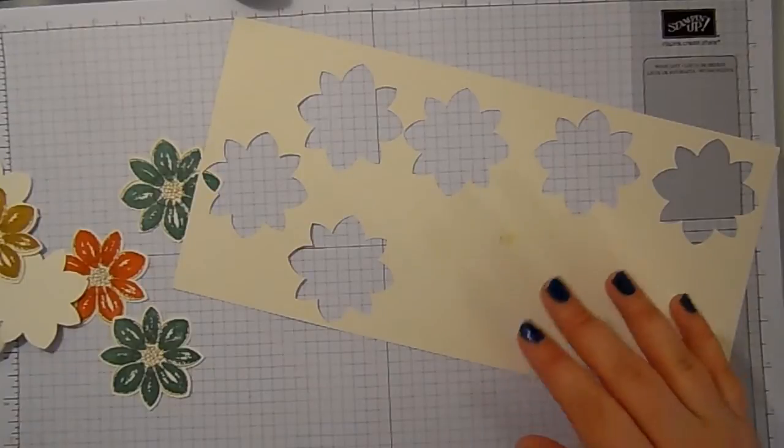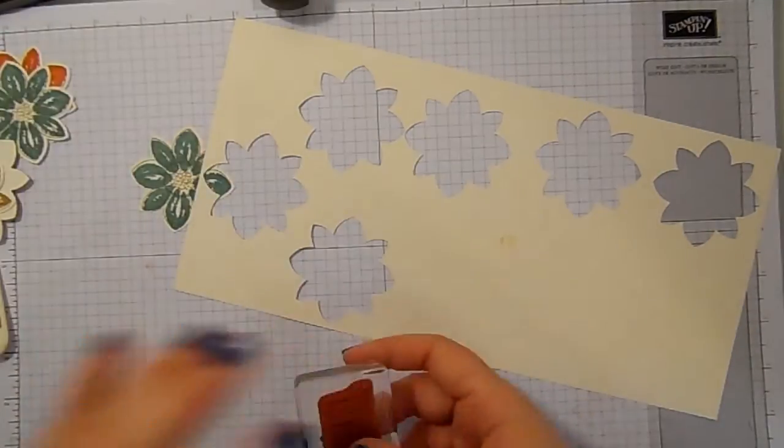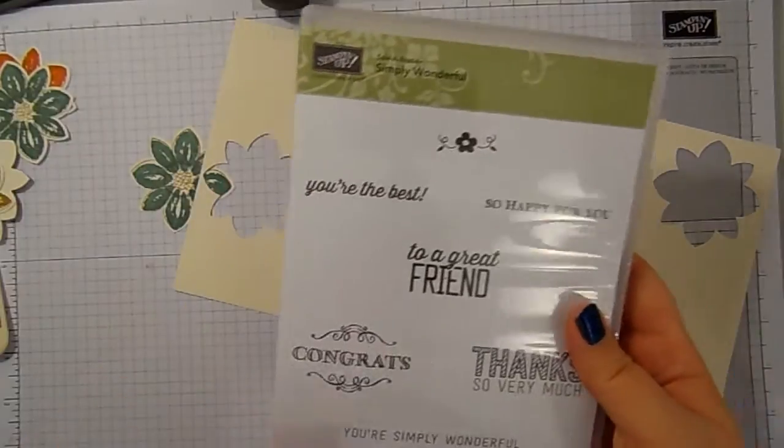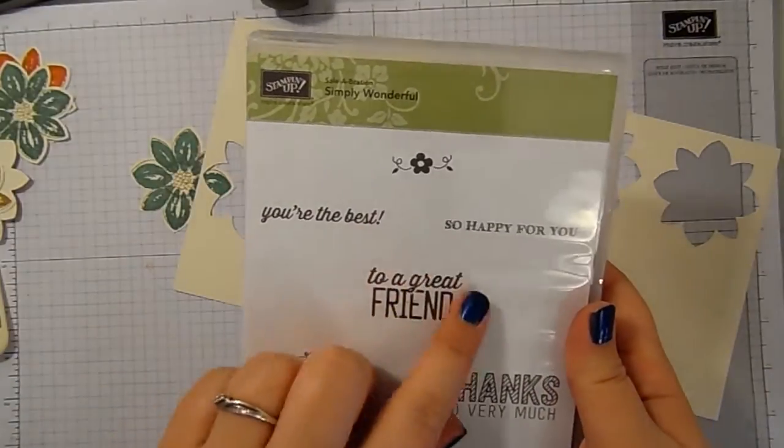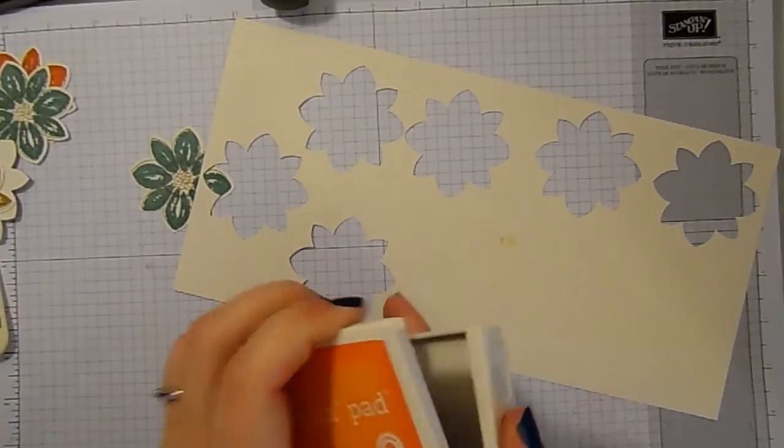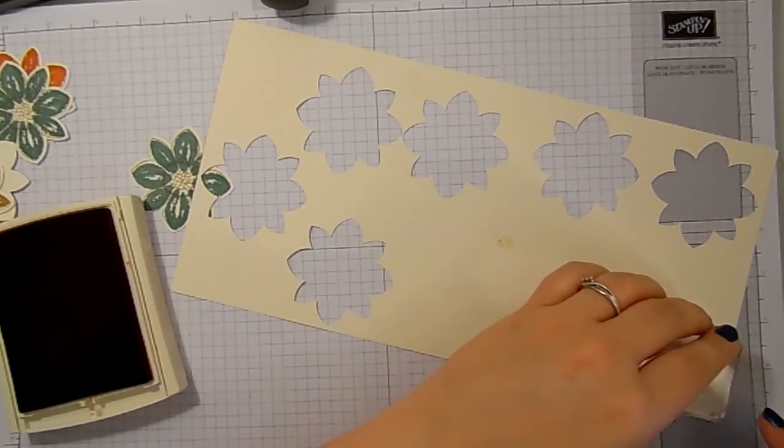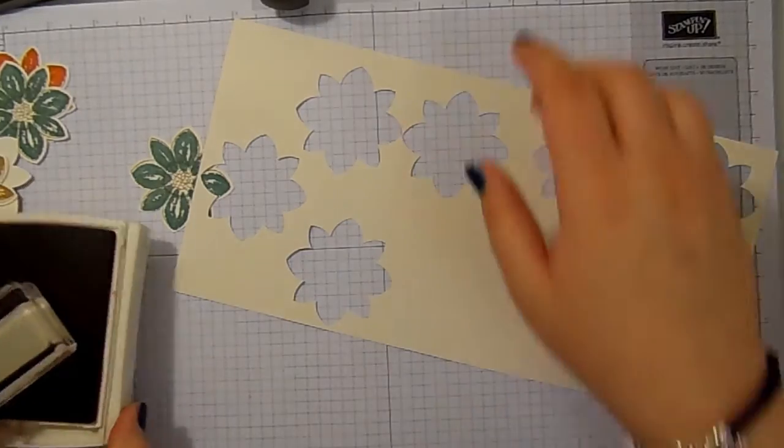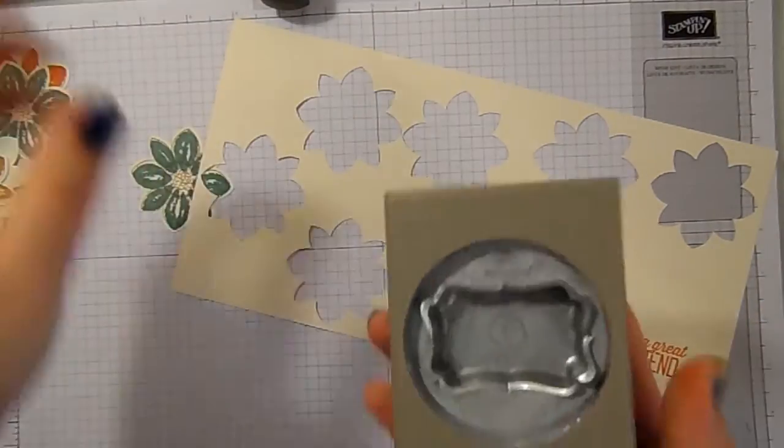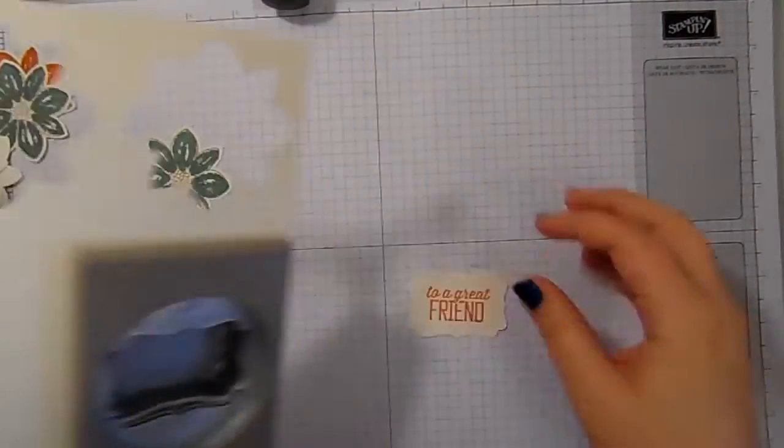And then while I've got my piece of Very Vanilla, I've got the Simply Wonderful Celebration stamp set. And I've got 'To A Great Friend.' And I'm going to stamp this in Tangelo Twist. And I've got the Decorative Label Punch just to punch that out.